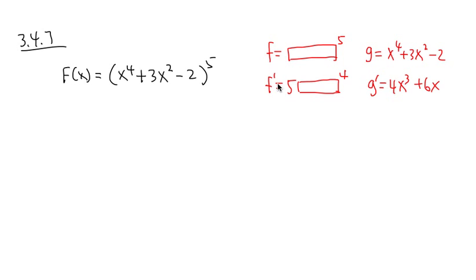Now, how the chain rule works is this. You look at f prime, so 5 box to the fourth power, you are going to take g, which is this, and put it in the box. When you're writing the answer down, don't ever use the box, use parentheses.